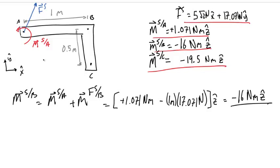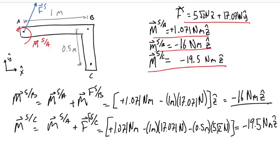Checking the moments from this system at C: we take the moment at A plus the moment from the force at A about point C. We again get negative 19.5 newton meters Z-hat at point C, verifying that the force and couple found at A is equivalent to the original loading. You can repeat this exercise by finding an equivalent force and couple at B and C and confirming the moments at A, B, and C match the original loading scenario.